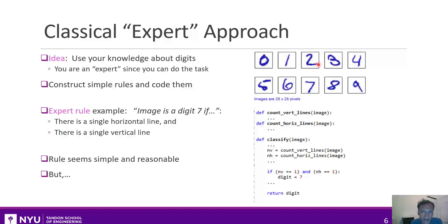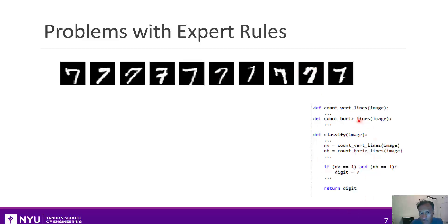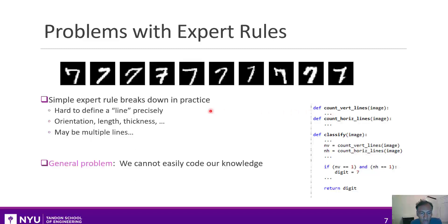But there are some problems with this expert approach. Looking at 10 random sevens from that dataset, you can see many problems when we try to apply our expert knowledge to real digits. How do we actually define a line? A line can vary in thickness and can have bends in it. What's a vertical line versus a horizontal line? Some of these are at angles and some have bends. This actually becomes quite complicated, and it's not very easy to encode that into a computer.